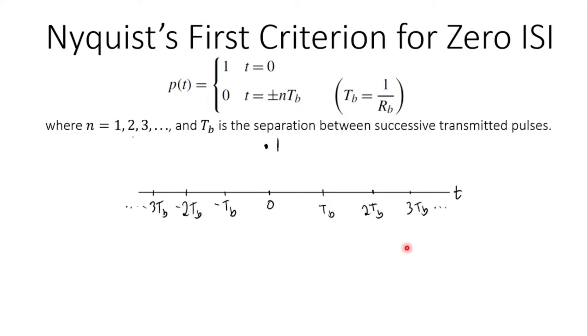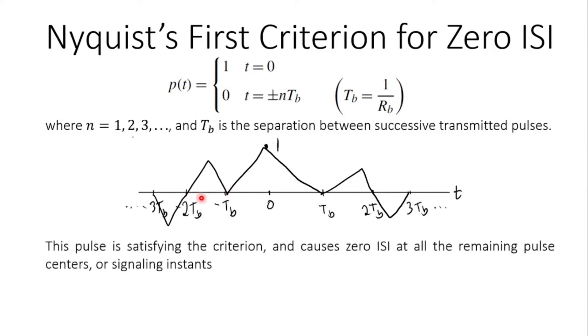Of the several possible options let us assume this wave which have a value of 1 at 0 and it has 0 crossing at integer multiples of Tb. This pulse is satisfying the criterion and causes 0 ISI at all remaining pulse centers or signaling instants.